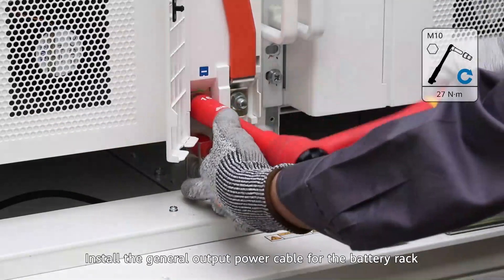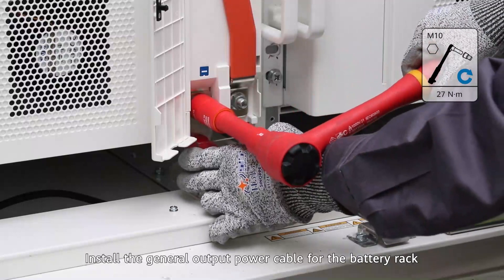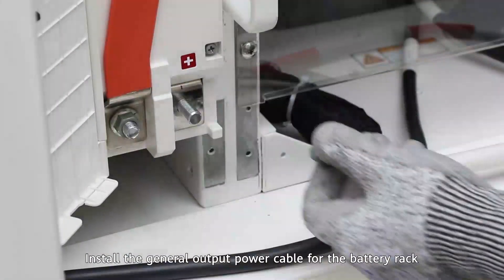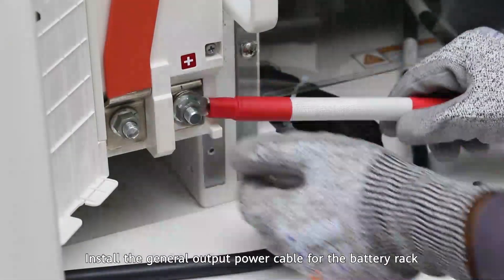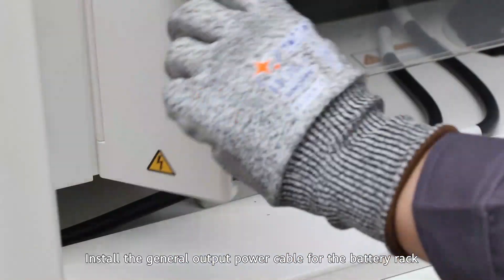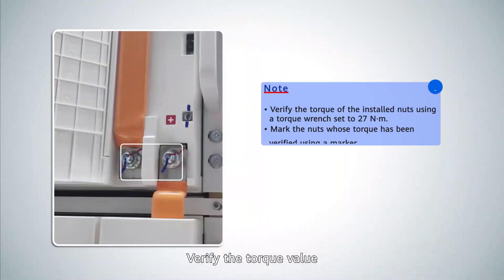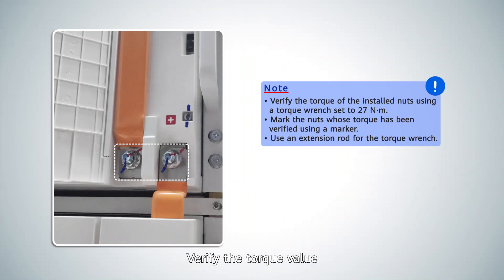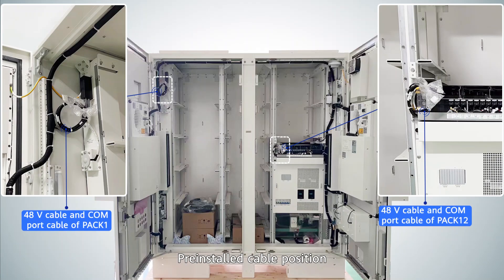Install the general output power cable for the battery rack. Verify the torque value at the pre-installed cable position.